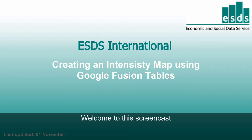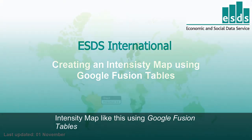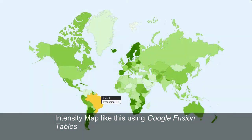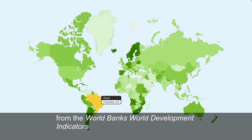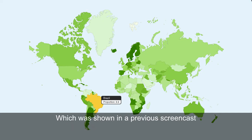Hi, welcome to the screencast. We're going to show you how to create an intensity map like this using Google Fusion Tables. We're going to use data we downloaded from the World Bank's World Development Indicators, and we downloaded this data from ESDS International, which was shown in a previous screencast.